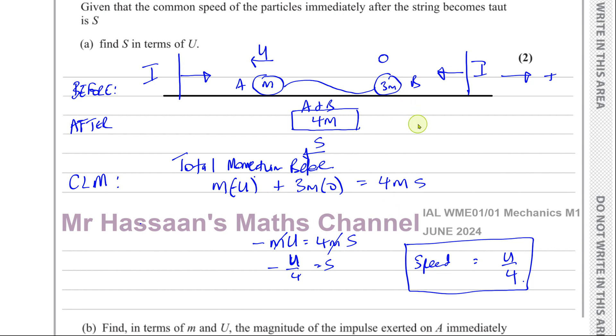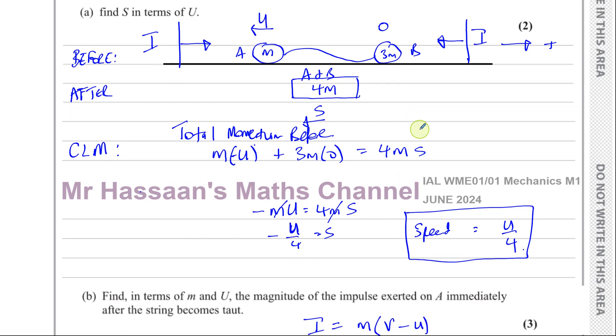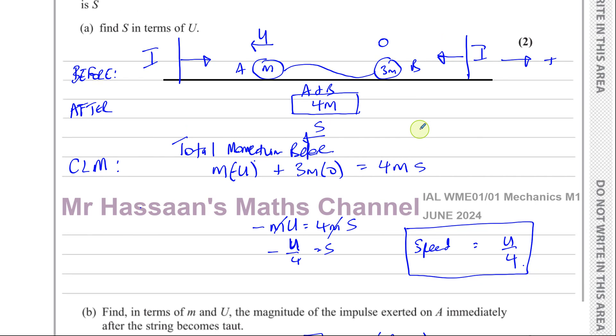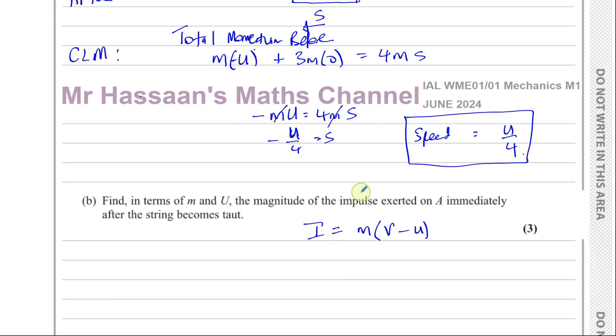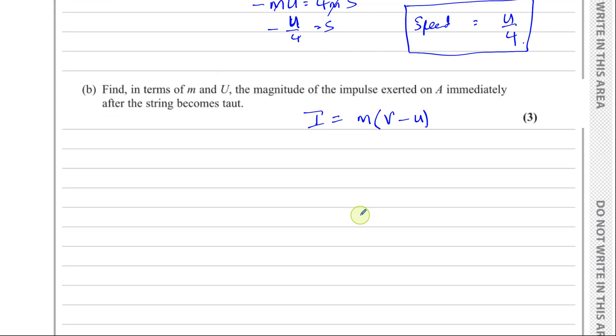Probably using B will be easier. If we find the magnitude of the impulse exerted on A, that will have the same value, the same magnitude. The same magnitude as the impulse exerted upon B. Both of them have the same value. So if I find the impulse exerted on B, it will be the same as the impulse exerted on A, but with the opposite sign, that's all. So I can choose A or B. Let's consider B.